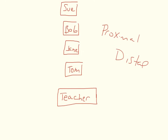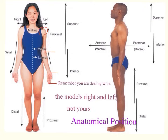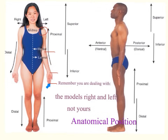Now let's apply proximal and distal to an actual anatomical structure. With the shoulder as the circled point of attachment, the elbow is proximal to the wrist — the elbow is closer to the point of attachment than the wrist. The wrist is distal to the elbow. The wrist is proximal to the fingers, as the wrist is closer to the point of attachment than the fingers. The fingers are distal to the wrist.